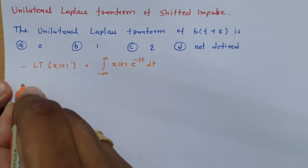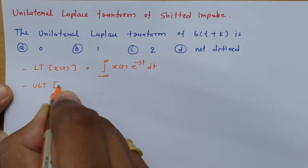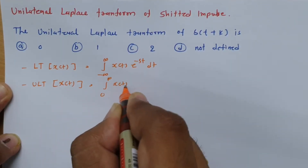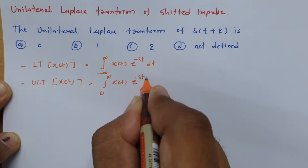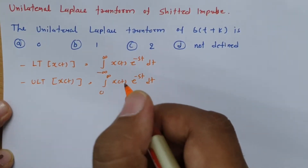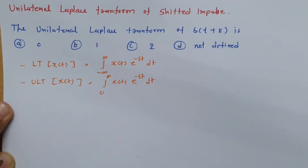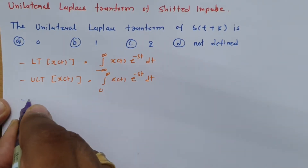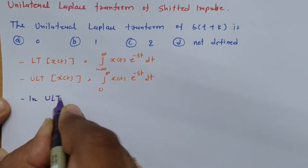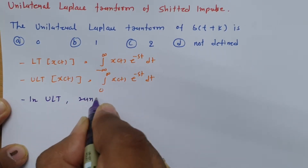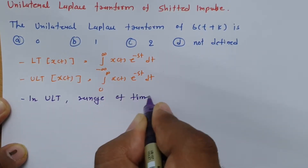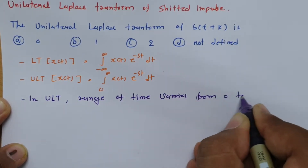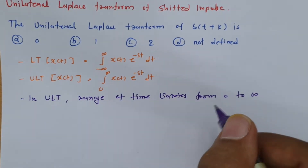When we talk about the unilateral Laplace transform, that is the integration from 0 to infinity of x(t) · e^(−st) dt. So in the unilateral Laplace transform, the range of time varies from 0 to infinity. This is what we need to keep in mind.